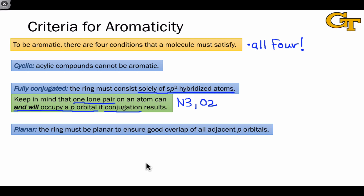The third criterion is that the molecule must be planar. The ring must be planar so that it's fully conjugated. The key here really is that the molecule must be planar to ensure good overlap of the p orbitals on adjacent atoms. A great example of a molecule that is not planar and is therefore non-aromatic is cyclooctatetraene, which puckers itself so that some of the p orbitals can't overlap with each other on adjacent atoms.